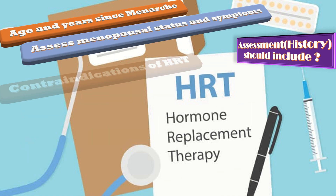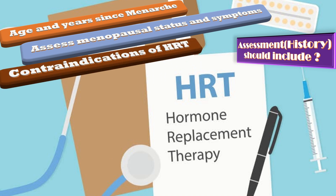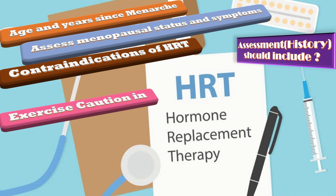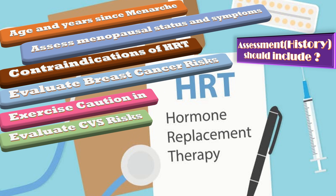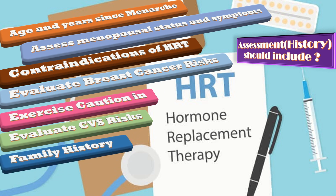Check the contraindications of starting HRT, which include unexplained vaginal bleeding, active or recent arterial thromboembolic diseases, breast or endometrial cancer, active liver diseases, or SLE. Exercise caution in women with diabetes, hypertriglyceridemia, active gallbladder disease, and migraine with aura. Evaluate cardiovascular risk by asking about hypertension, diabetes, smoking, obesity, and sedentary lifestyle. Also evaluate breast cancer risk and take family history of cardiovascular disease, VTE, and breast, ovarian, or bowel cancer.